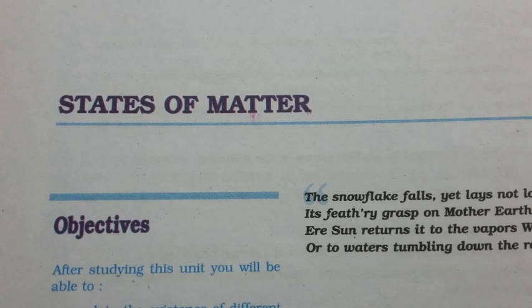Molar volume of some gases is given in Table 5.2. Number of moles of a gas can be calculated as n = m/M, where m is the mass of the gas and M is the molar mass. Thus V = K₄ × m/M. Rearranging: M = K₄ × m/V = K₄ × D, where D is the density of the gas. We can conclude that the density of a gas is directly proportional to its molar mass.